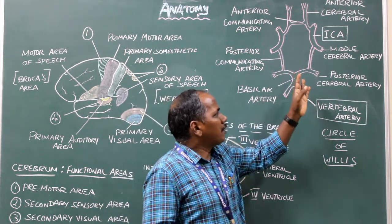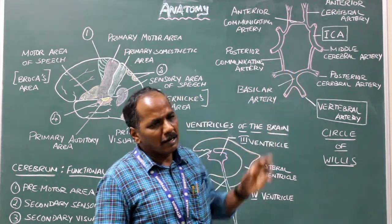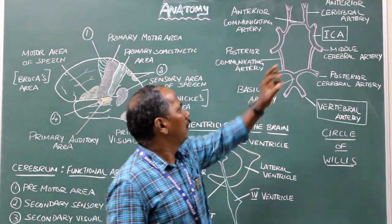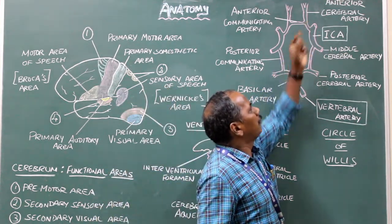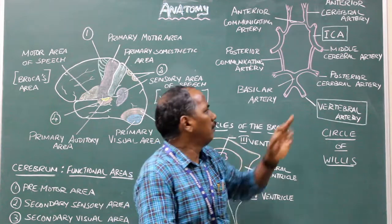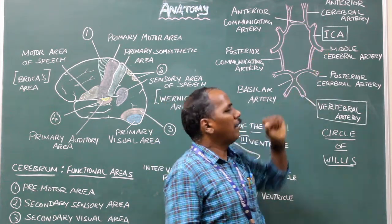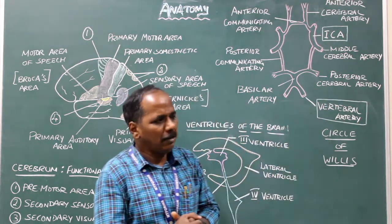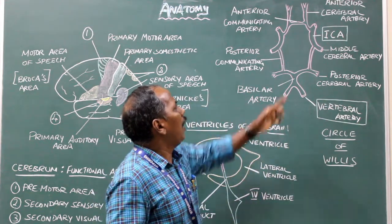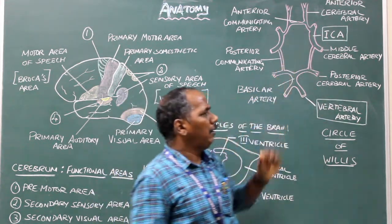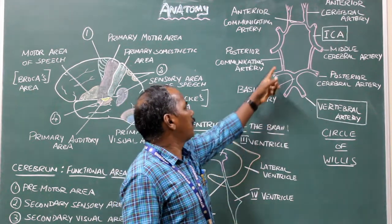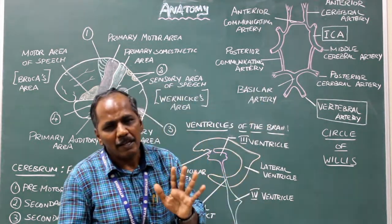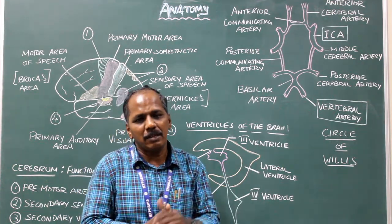The branches from the internal carotid artery and the vertebral arteries are: number one, anterior cerebral artery; number two, middle cerebral artery; number three, posterior cerebral artery; number four, anterior communicating artery. These are the five major arteries which supply the cerebrum.